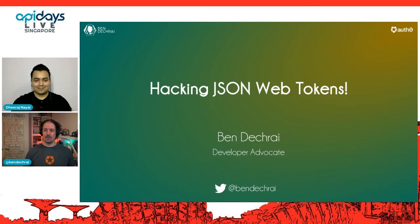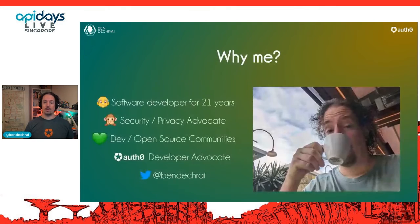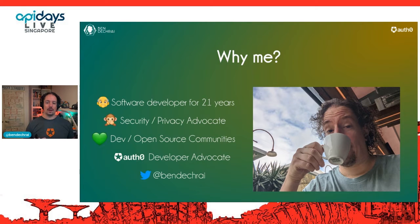My name is Ben. I am a developer advocate for Auth0. But I'd like to give you a bit more of an introduction just to help you understand why I'm here and why I'm talking to you about hacking JSON web tokens. My background is in software development — I've been doing it for 22 years. For a lot of that it's been a heavy focus on security and privacy, advocacy, talking about it at conferences, and I've run conferences.